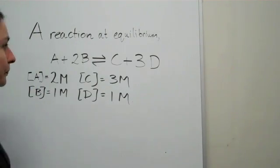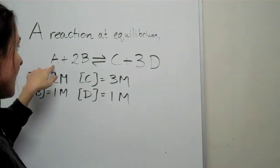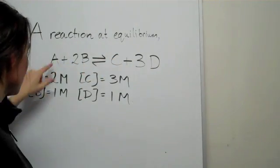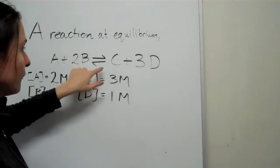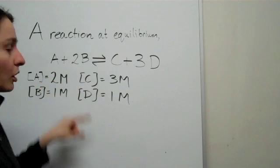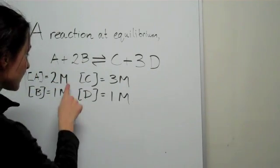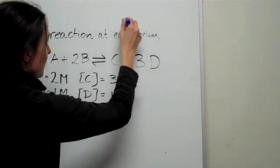The question says reaction at equilibrium. Here's your reaction: A plus 2B back and forth C plus 3D has these following concentrations.